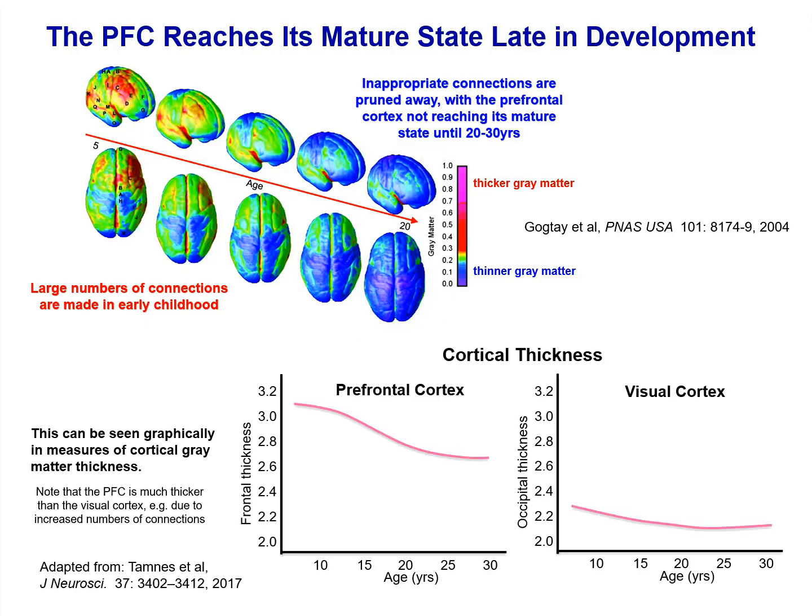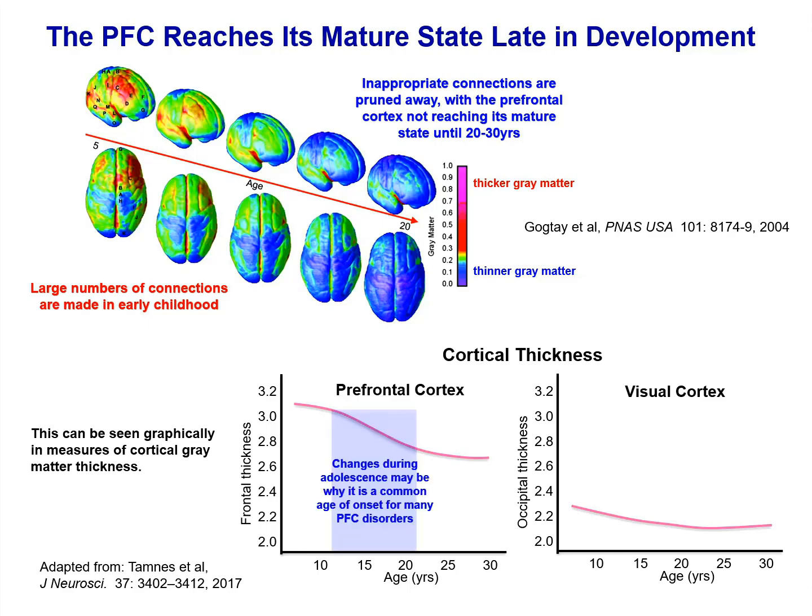In graphic form we can see that the prefrontal cortex continues to change into the third decade, while the primary visual cortex develops earlier. Also note that the prefrontal cortex is much thicker than the visual cortex because it has so many more connections. Notably, there are steep changes in gray matter in prefrontal cortex during adolescence, which is a common age of onset for many mental disorders, such as schizophrenia, so developmental changes in circuits may confer vulnerability during this time.